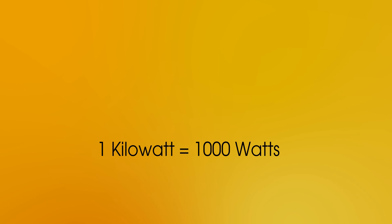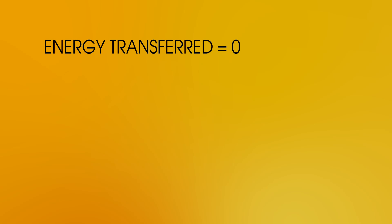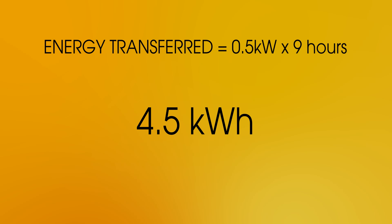Let's look again using those new units. For a 500 watt TV — 1 kilowatt is 1,000 watts, so 500 watts is 0.5 kilowatts. It was left on for 9 hours, so energy transferred equals 0.5 kilowatts times 9 hours, which is 4.5 kilowatt hours. Much easier to bill for that than 16,200,000 joules.